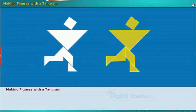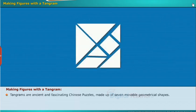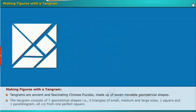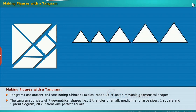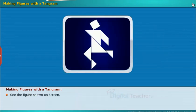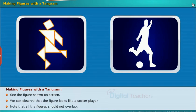In this section you will be able to know about making figures with tangram. Tangrams are ancient and fascinating Chinese puzzles made up of seven movable geometrical shapes. The tangram consists of seven geometrical shapes: that is five triangles of small, medium and large sizes, one square and one parallelogram, all cut from one perfect square. See the figure shown on screen. We can observe that the figure looks like a soccer player. Note that all the figures should not overlap.